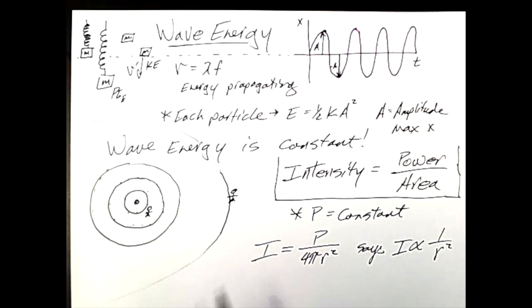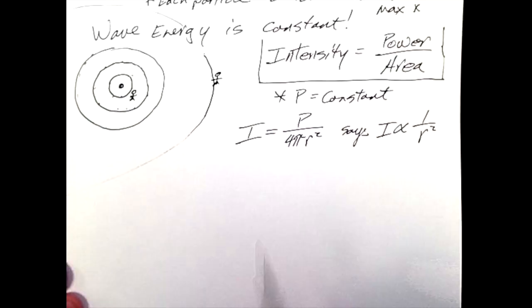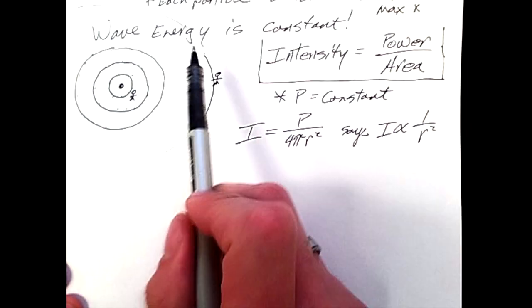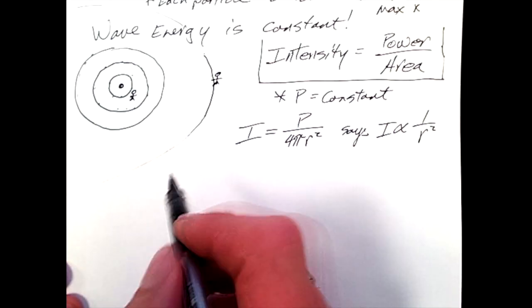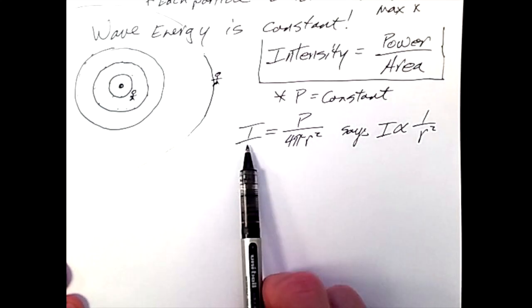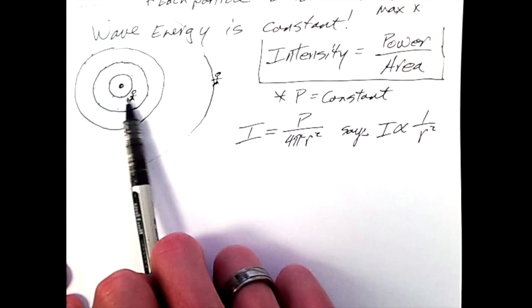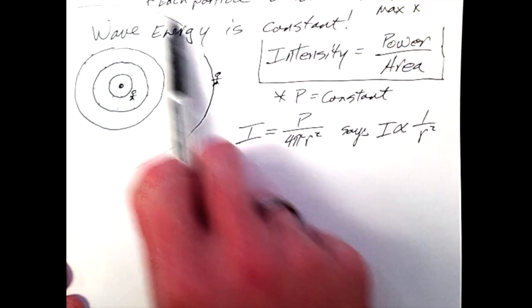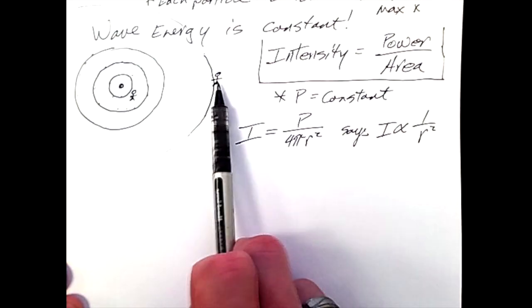So as a wave propagates, the intensity of a wave decreases as a function of the radius due to the fact that there is no additional energy added to each particle as the energy propagates through the system. So since the energy of a wave is constant, then instead of analyzing power of a wave, we'll be analyzing the intensity, the measurement of the value of energy spread across the surface at a particular location.